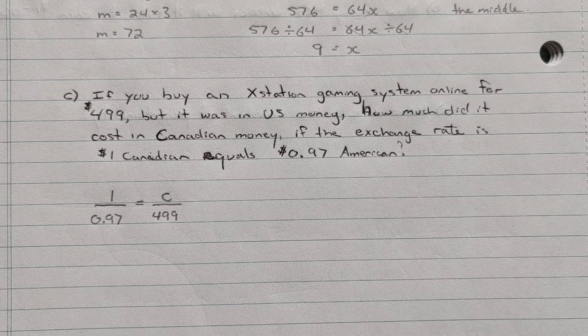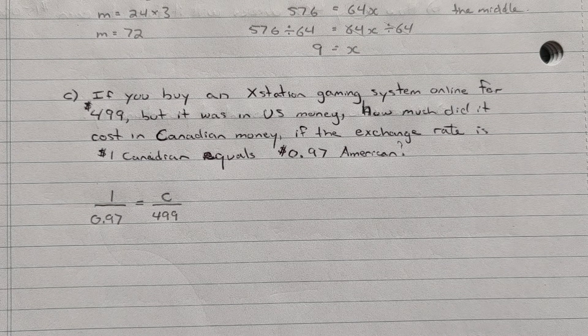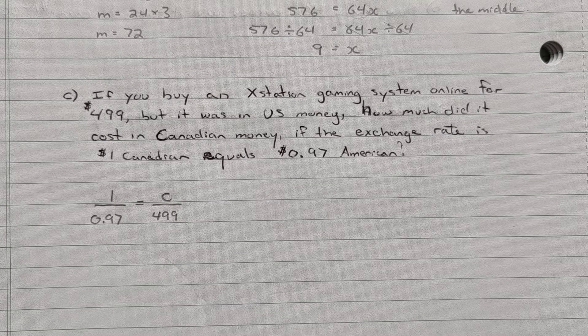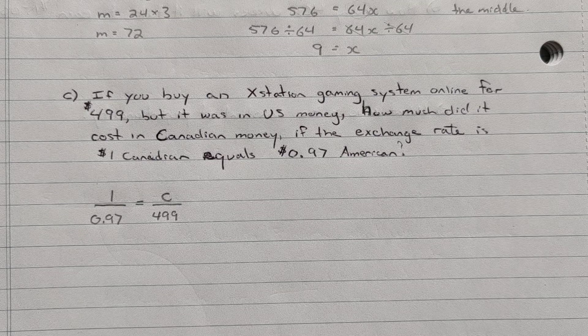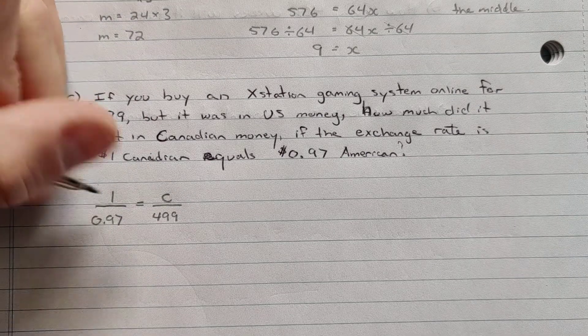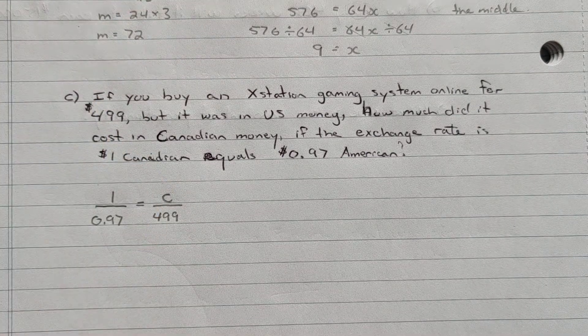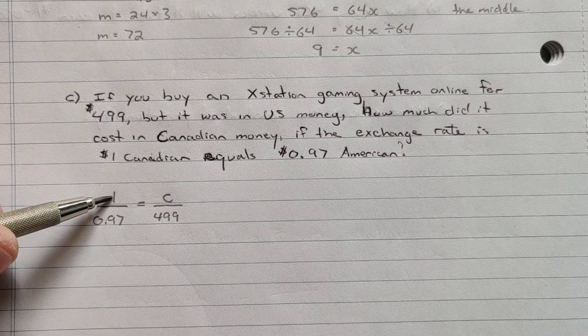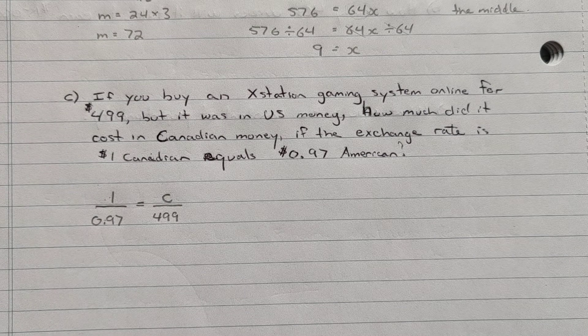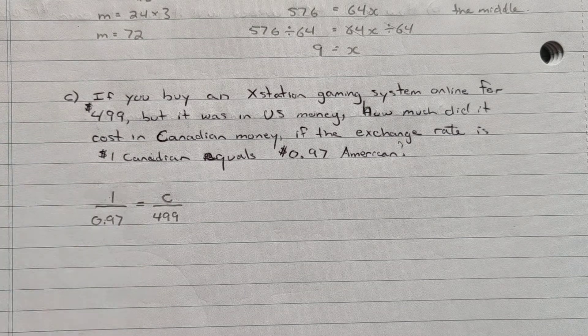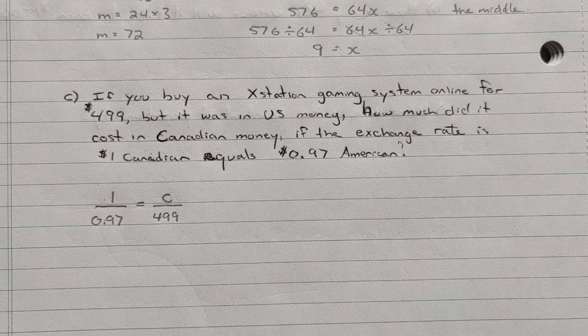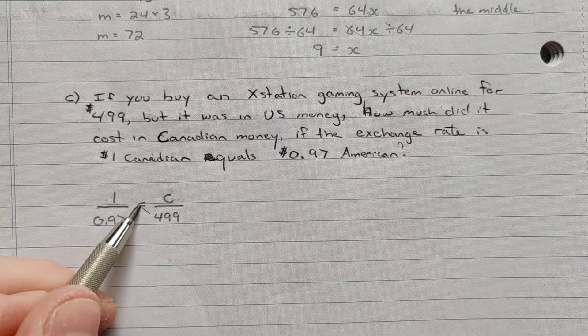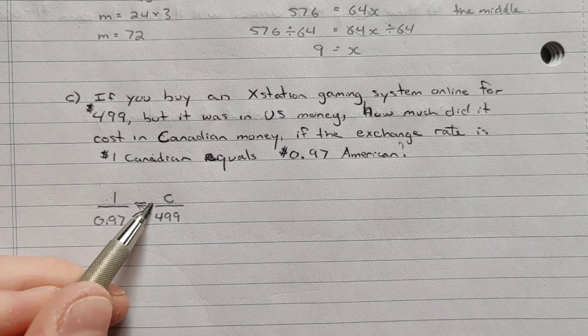And since I have Canadian on top and American on the bottom, I'll do the same thing with my X-Gaming system. So I'm looking for the cost here. I'll call it C in Canadian over the cost in American that I paid, $499. Now, if you put American money on the top, it would be the same thing. We would get the same solution. As long as the tops are both Canadian and the bottoms are both American, you will get the same result. So here's our one rate, $1 Canadian is 97 cents American, and then our unknown value of Canadian is equal to the $499 American.